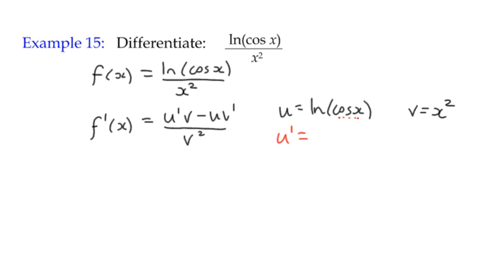So chain rule differentiates the outside function. Log(x) differentiates to 1 over whatever the inside function is, so it's 1 over cos(x), multiplied by the chain rule, the derivative of the term in the brackets. Cos(x) differentiates to negative sin(x).